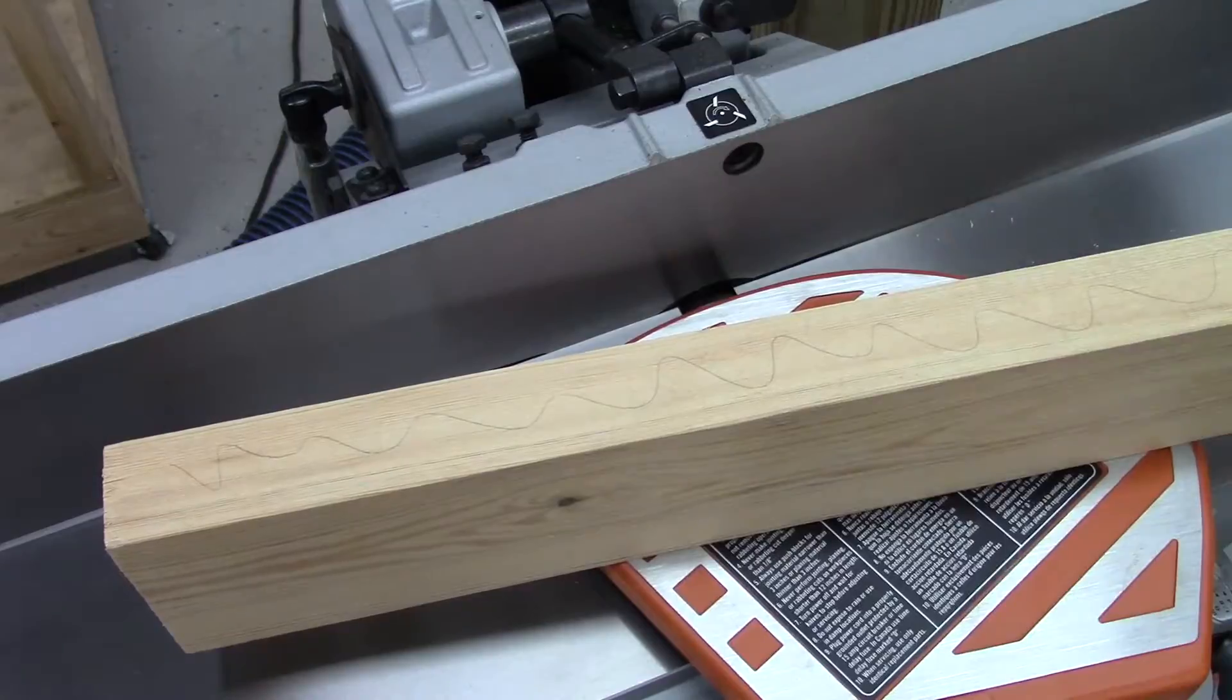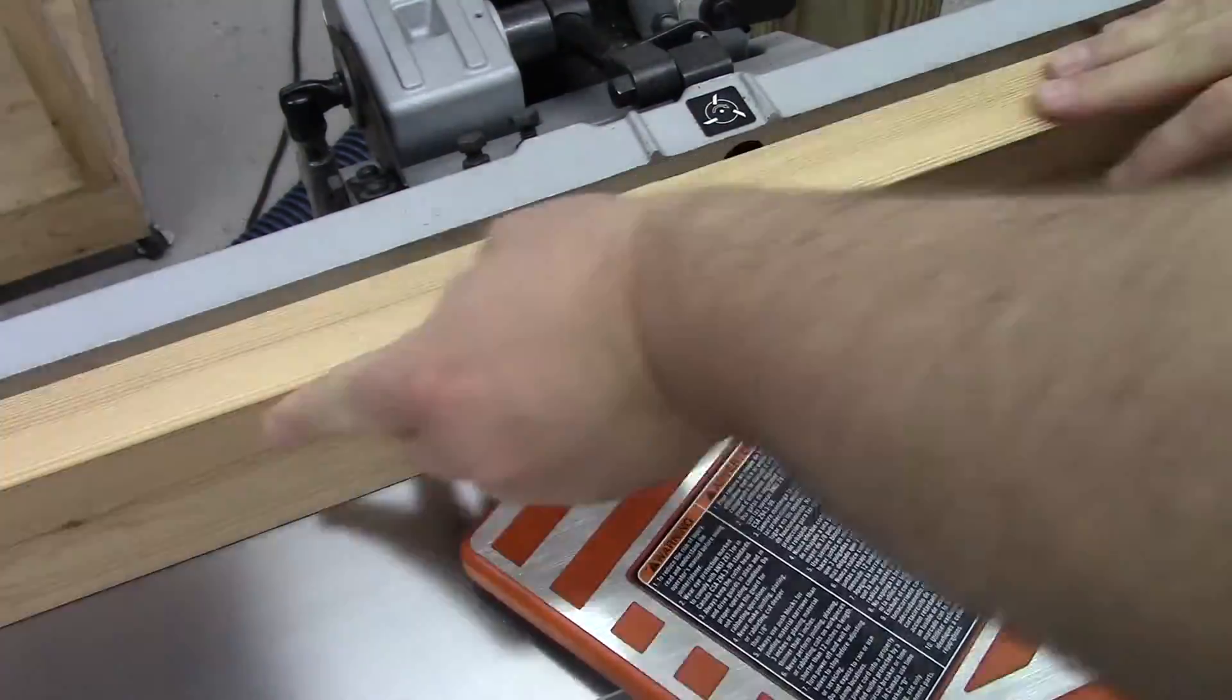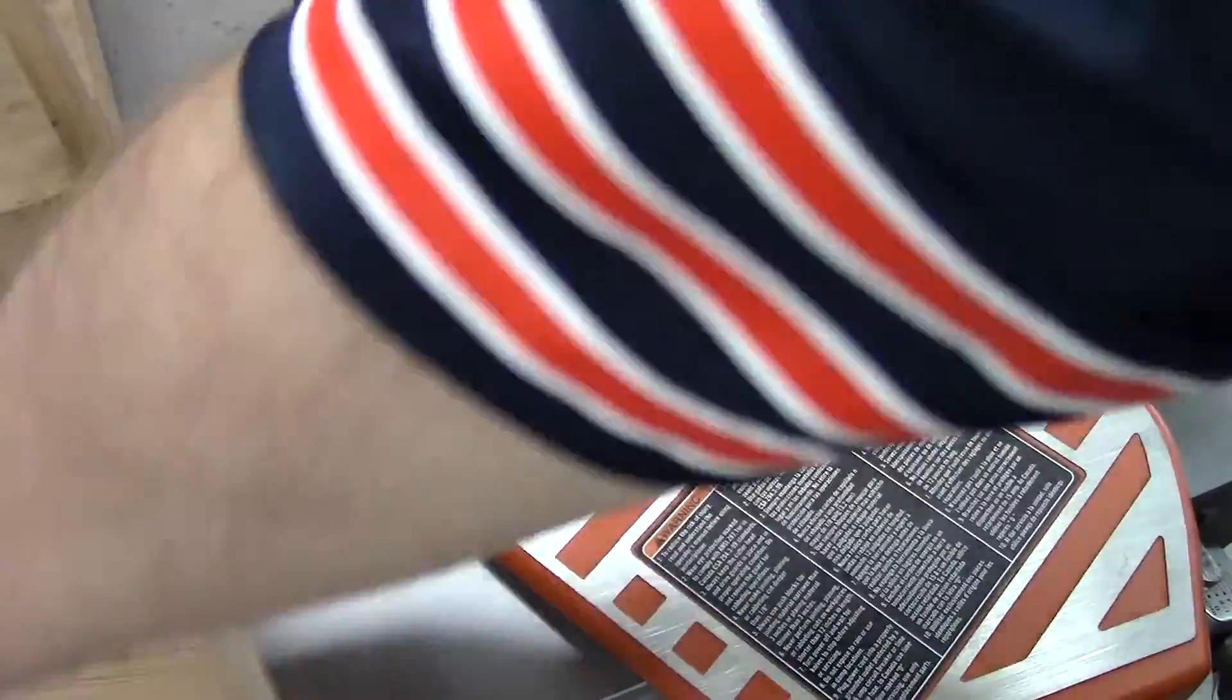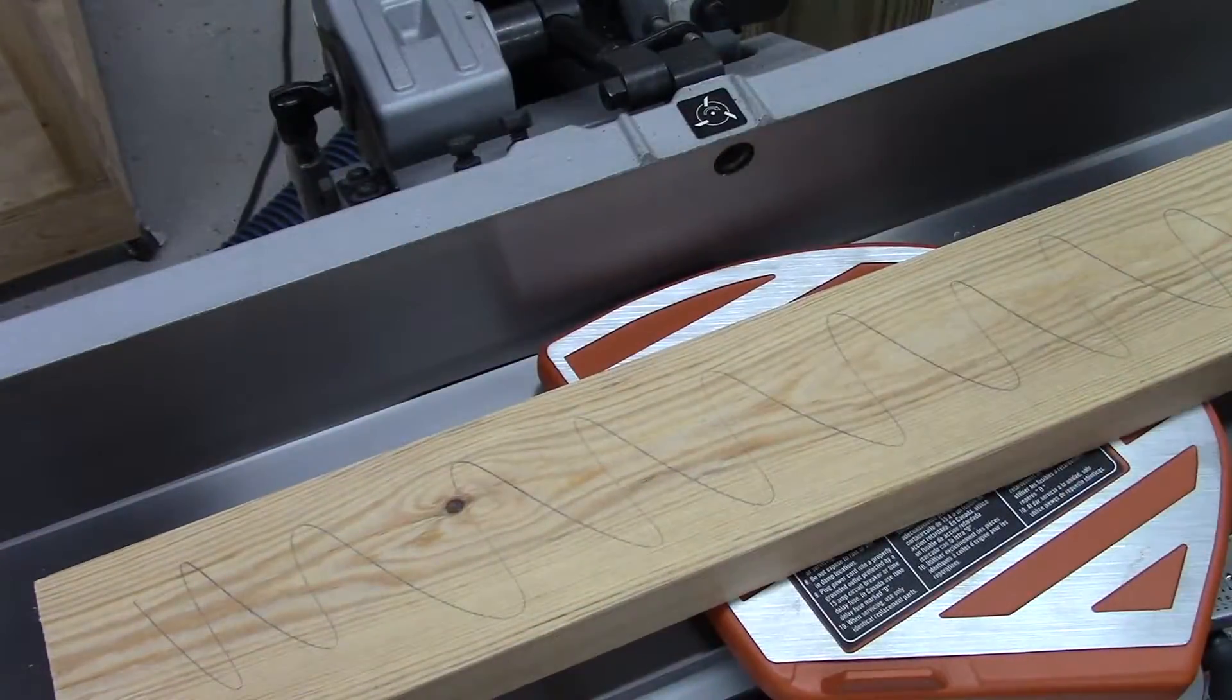Taking a scrap piece of 2x4, I place some pencil marks on it and then joint the sides until the marks are gone. This gives me a flat surface for attaching to the sled and for setting stock against.